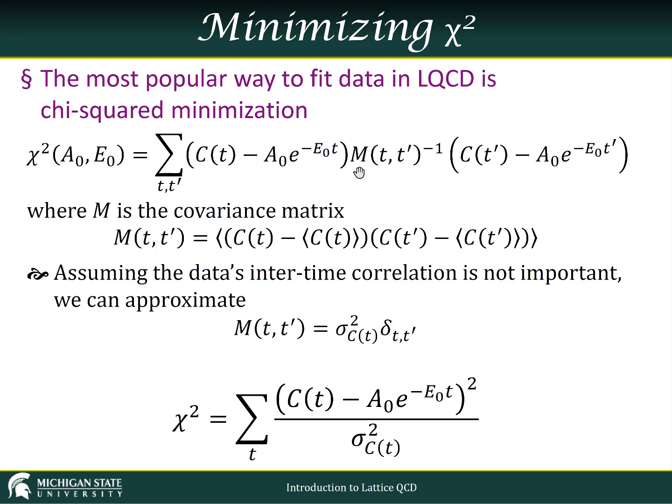In this case, that metric is the inverse of what's called the covariance matrix. Well, we just discussed autocorrelations earlier. The covariance is going to look very similar to that. It is the expectation value, the average over the fluctuations of the correlator at time t and the fluctuations at time t prime. It's as simple as that.